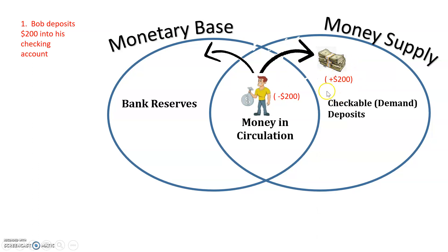Whenever money is put into deposits, it gets divided into the required and the excess reserves, because banks are required to put a certain percentage into required reserves in their vault, and then the excess reserves are what they have available to be loaned out.